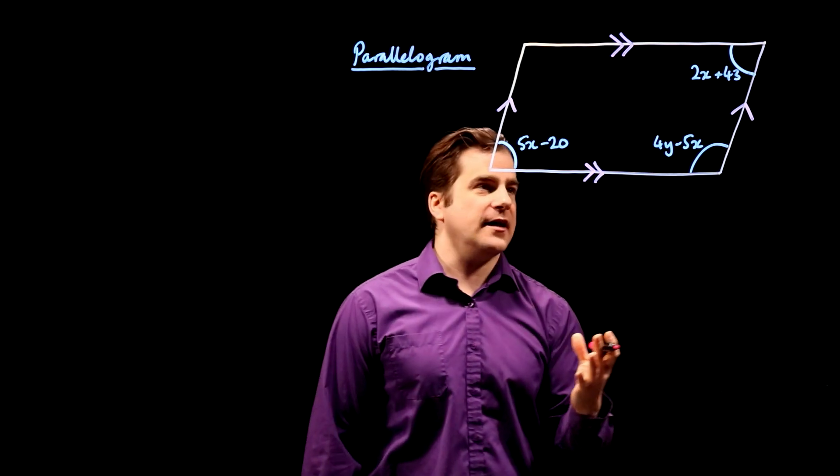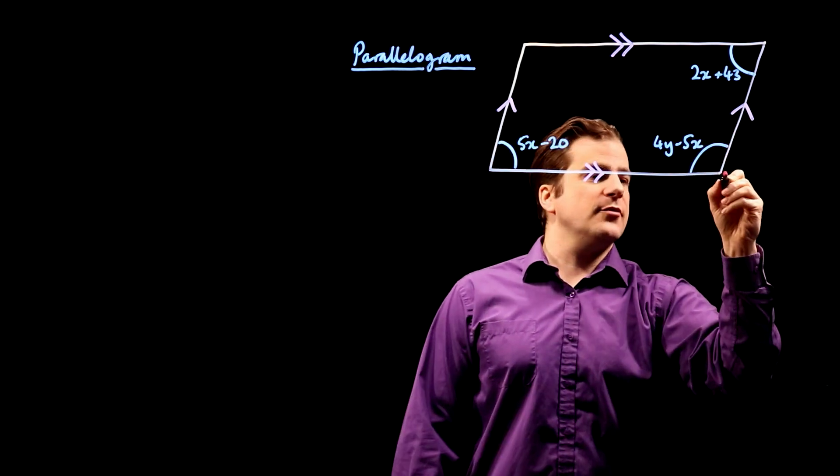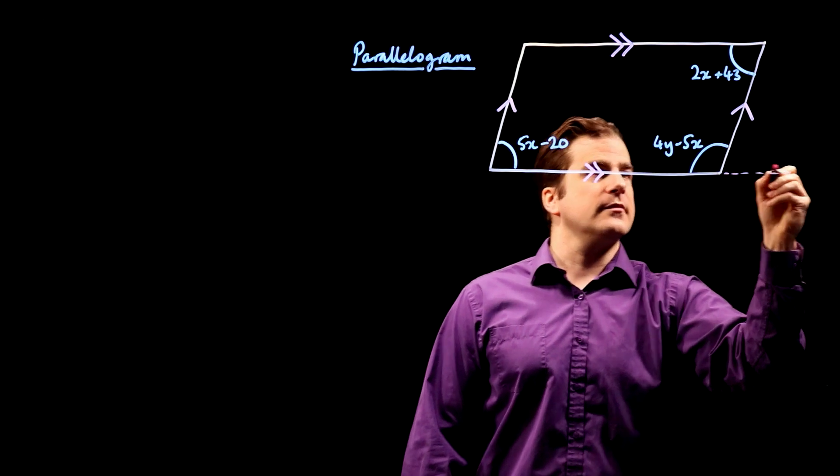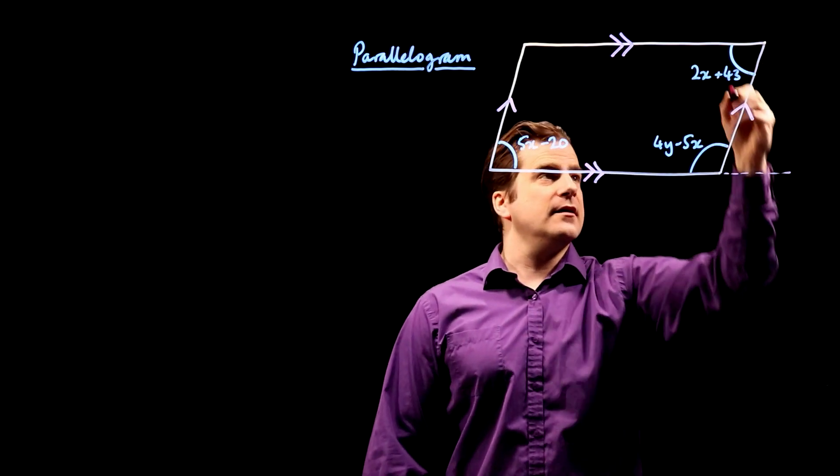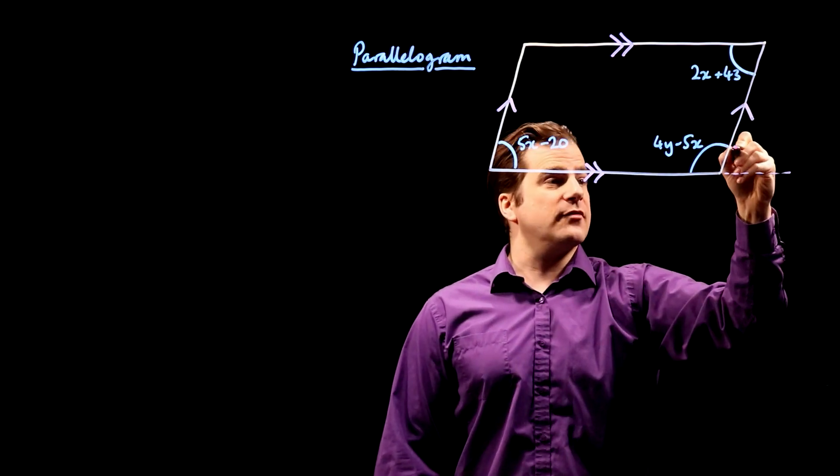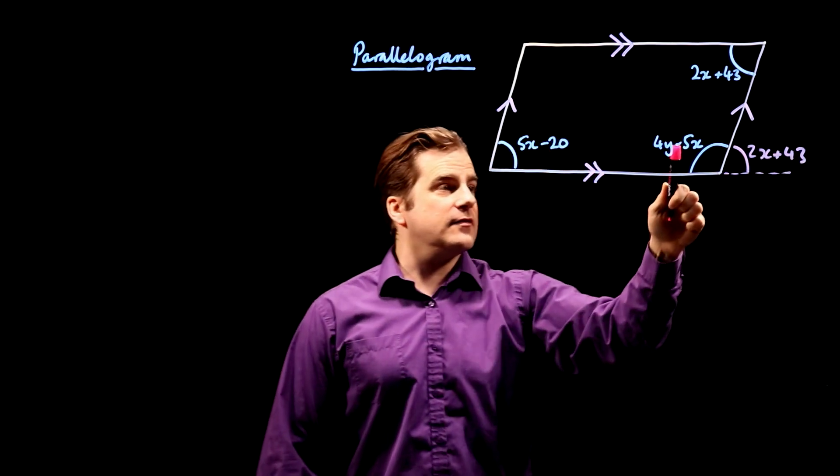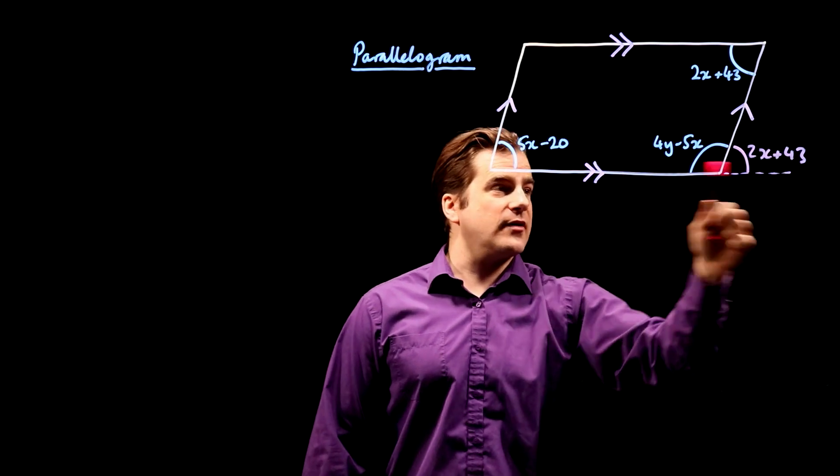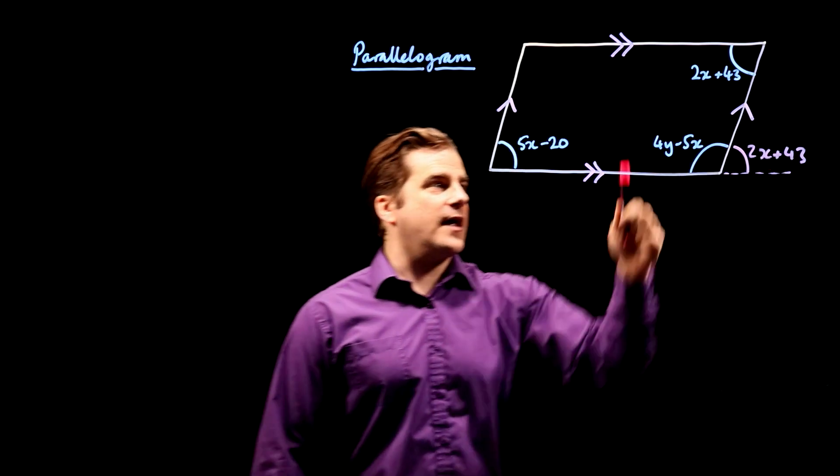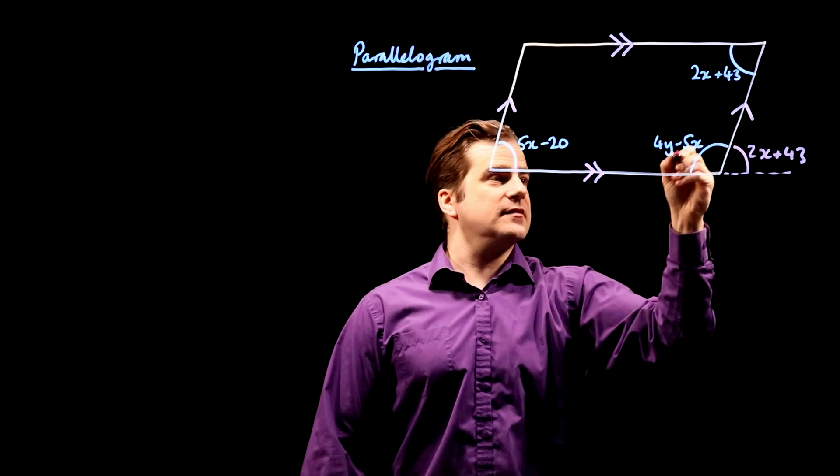Another way you can think of c angles is as z angles. If we extend this line here, we've got a z angle there. And these two angles are the same. So that one is also 2x plus 43. And two angles on a straight line add up to 180. So that's why c angles add up to 180.